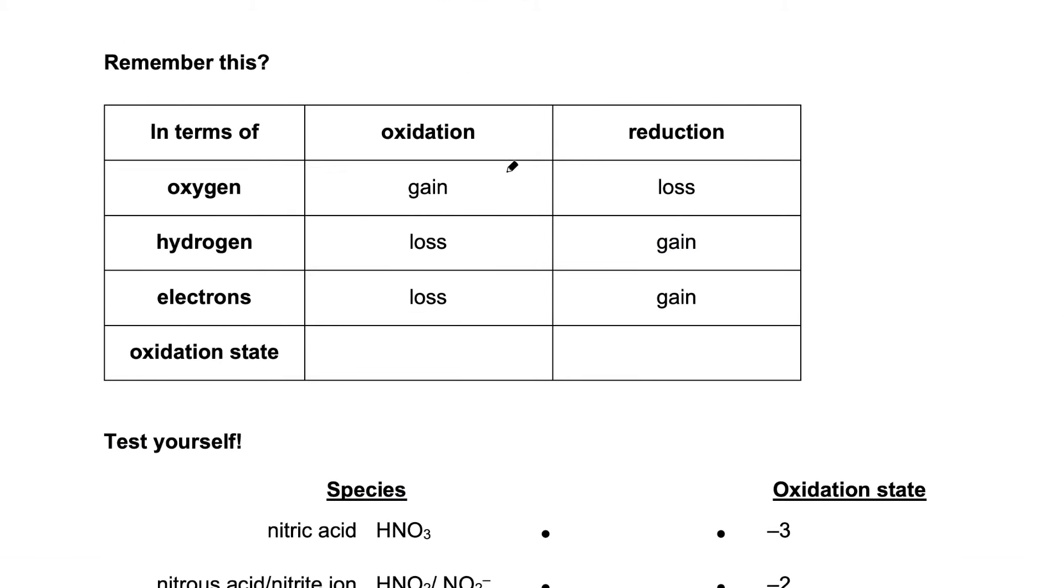All right, so do you remember this table? We now arrive at the last definition for redox, that is oxidation state. When the oxidation state increases, that substance is being oxidized and when the oxidation state decreases, that substance is being reduced.